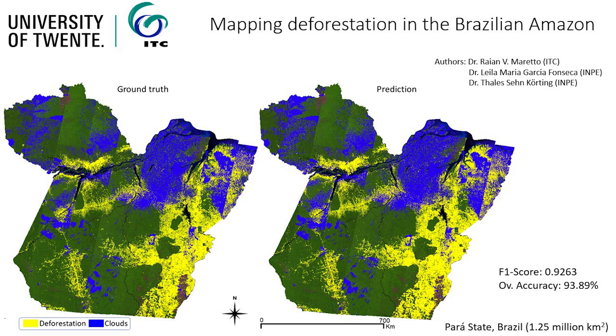Then we have the output map. You will also see on the screen the slide with both maps — the ground truth and the prediction — side by side. With this approach, we are already achieving a very good accuracy in the order of 95%. That means that 5% of the time it is not correct. That is actually a very high accuracy — it's very good.